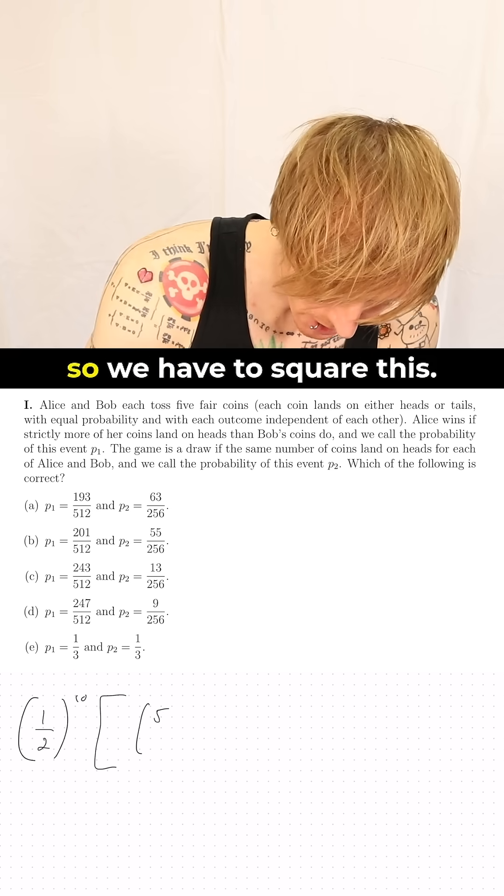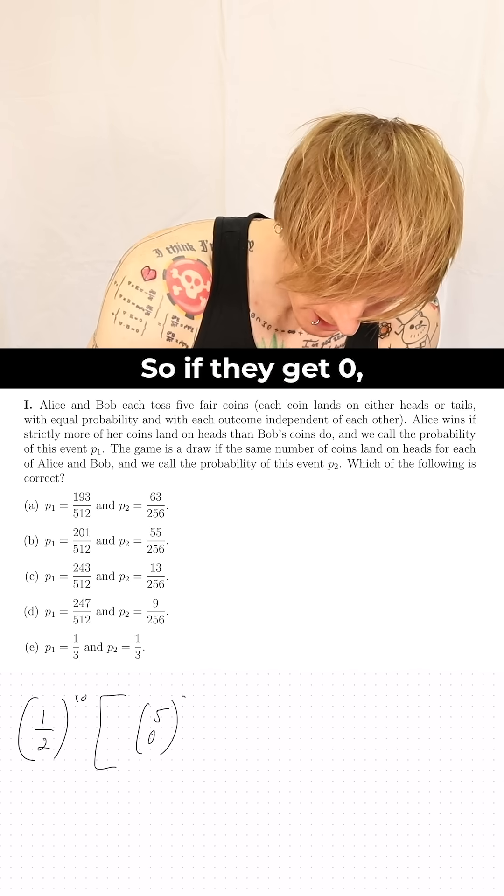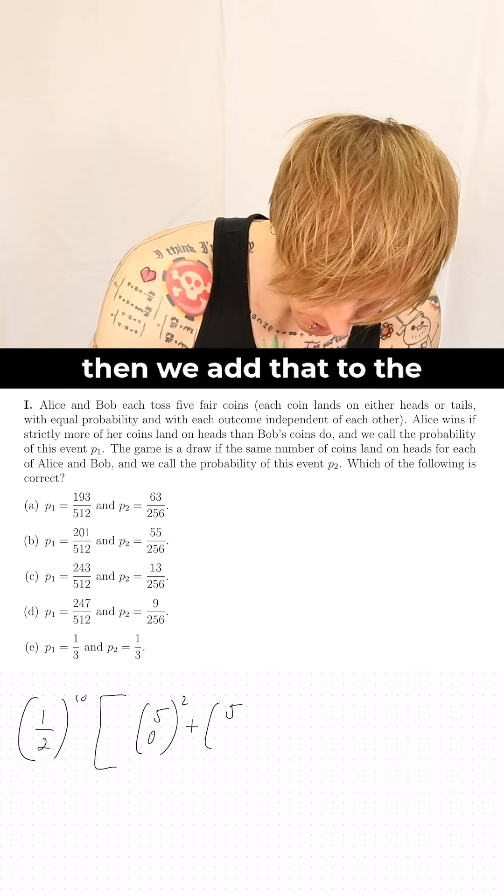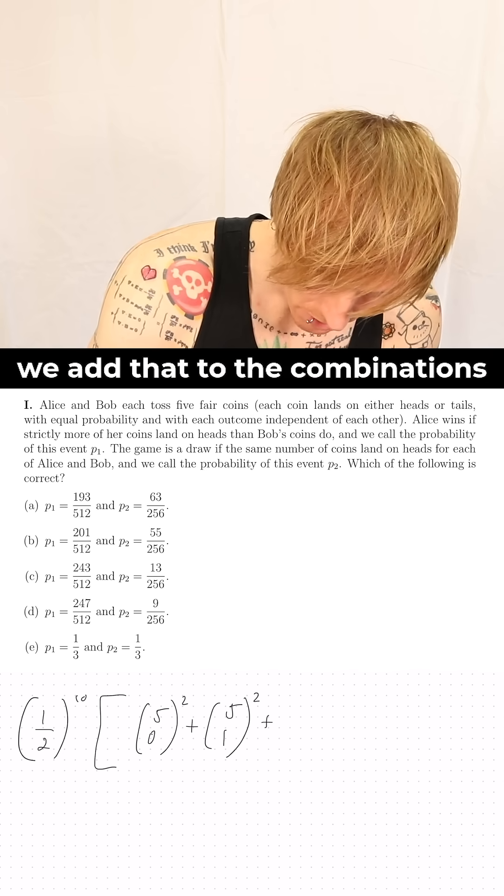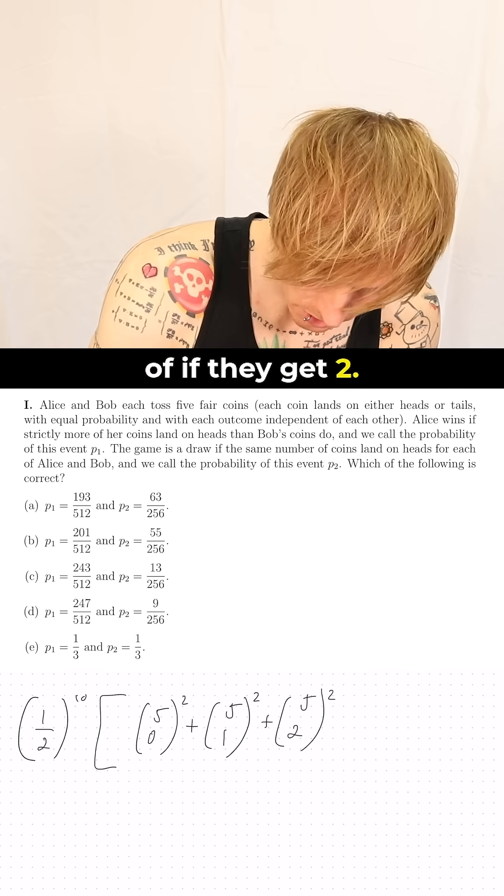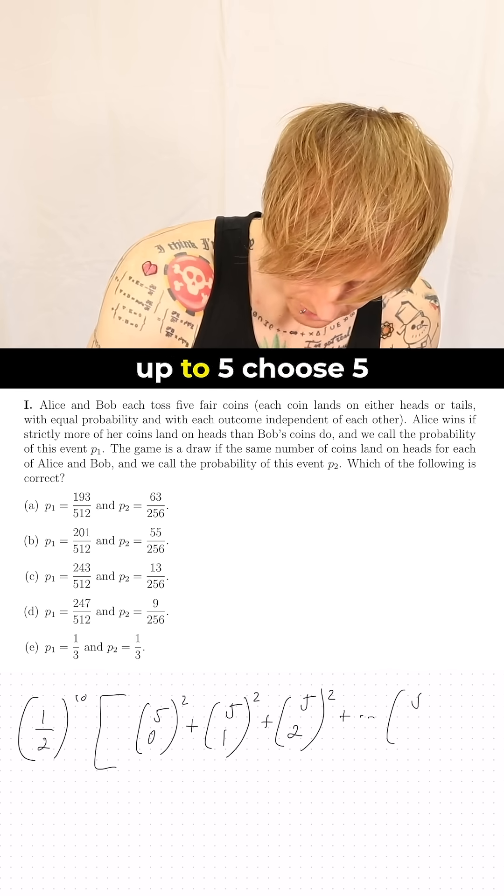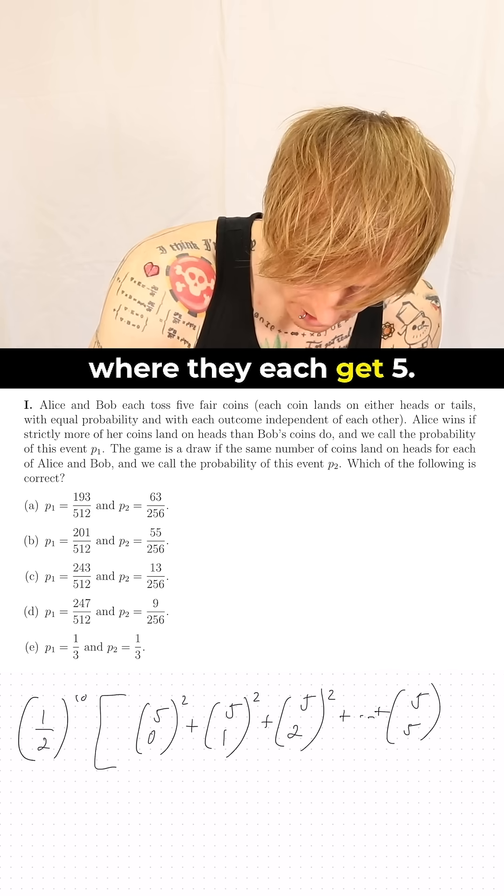So there's two of them so we have to square this. So if they get zero then we add that to the combinations of if they get one, we add that to the combinations of if they get two and this goes all the way up to five choose five where they each get five.